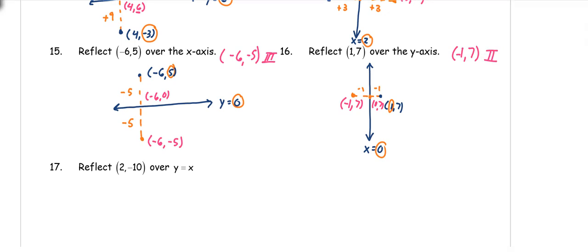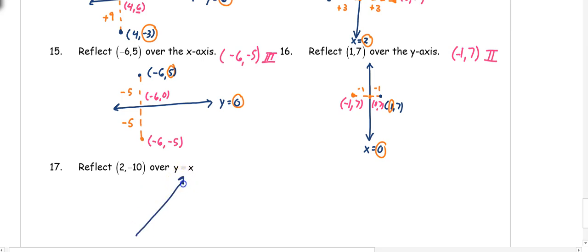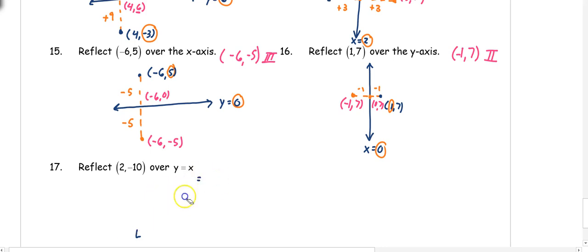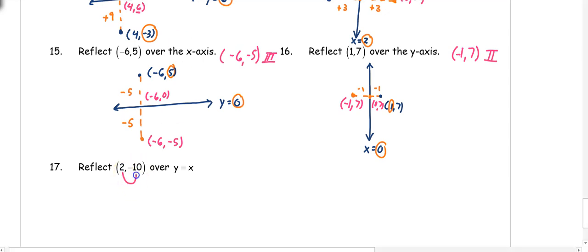Number 17: reflect (2, -10) over the y equals x line. Since it's a diagonal line, the shortcut is to switch the x and y coordinates. Switching gives (-10, 2), which is in the second quadrant.